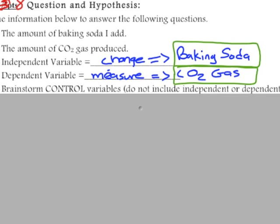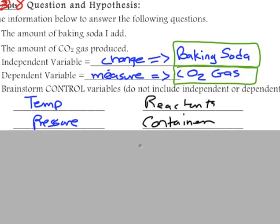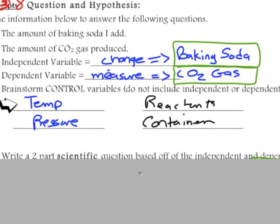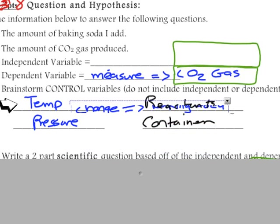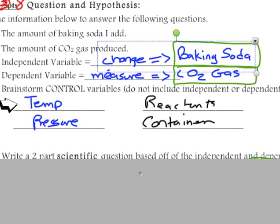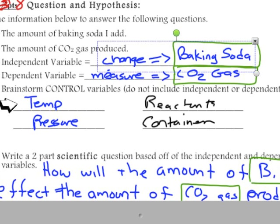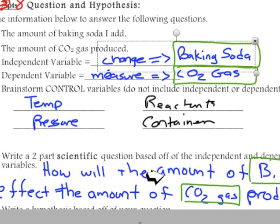Then brainstorm control variables — what else could change that might affect the amount of CO2 gas produced. Temperature, pressure, and the size or shape of the container are good examples. The worst thing you could do is have baking soda show up as a control — you need to change that, not keep it constant. To write a question: 'How will changing the amount of baking soda' — your independent variable — 'affect the amount of CO2 gas produced' — your dependent variable.